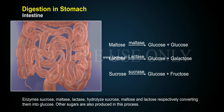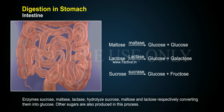Enzymes sucrase, maltase, and lactase hydrolyze sucrose, maltose, and lactose respectively, converting them into glucose and other sugars. Maltose, in the presence of maltase, converts to glucose plus glucose. Sucrose, in the presence of sucrase, converts to glucose plus fructose.